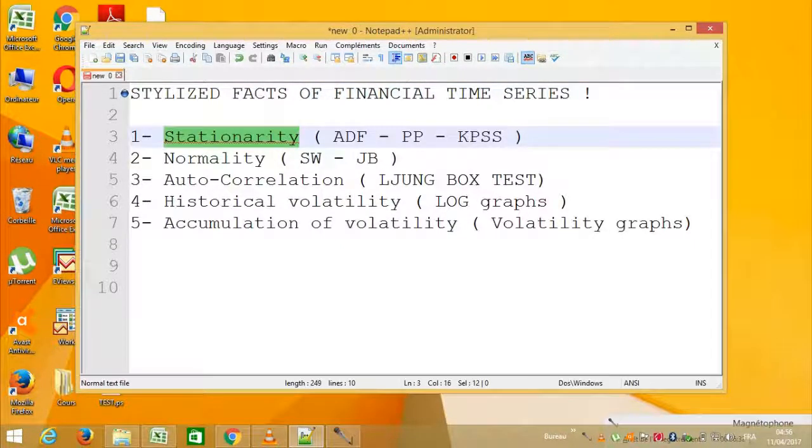So the first stylized fact is testing stationarity. To know if a process is stationary or not, we normally use three famous tests. First one is Augmented Dickey-Fuller test, or the ADF test. Second one is Phillips-Perron test, or PP test. And the last one is Kwiatkowski-Phillips-Schmidt-Shin test.